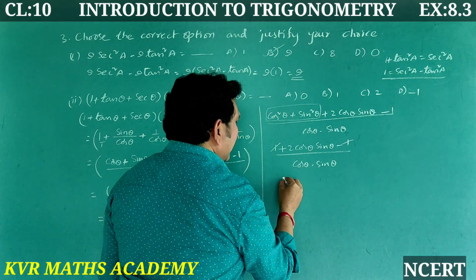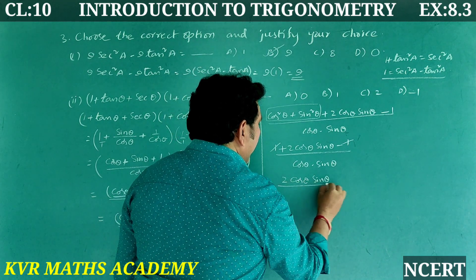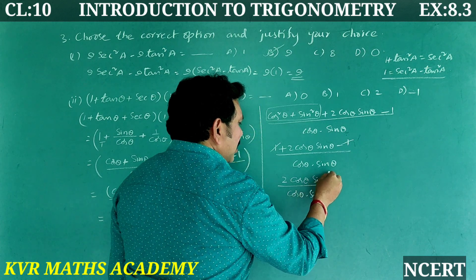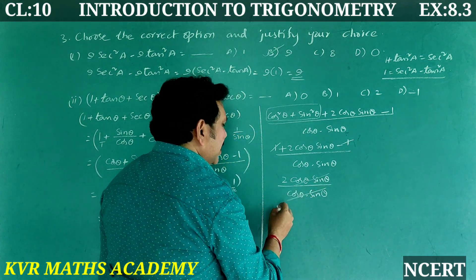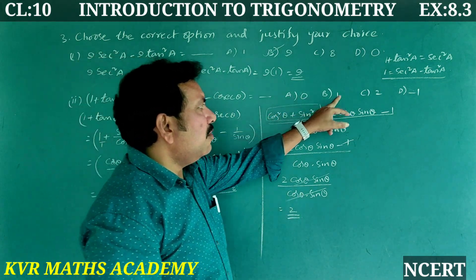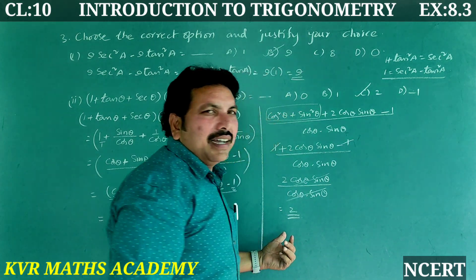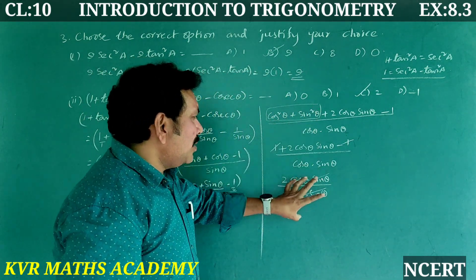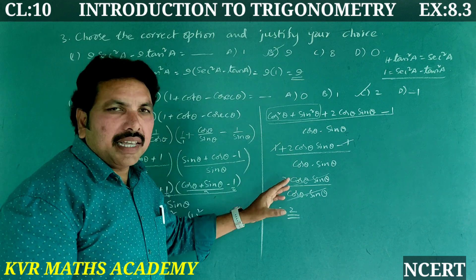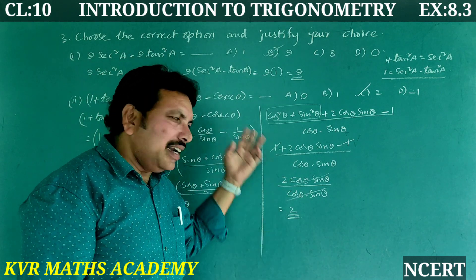The +1 and −1 cancel, leaving 2cosθ sinθ divided by cosθ sinθ. The cosθ sinθ cancels, giving final answer = 2. Looking at options (0, 1, 2, −1), option (c) 2 is the correct answer. Note down this step-by-step solution to get full marks.